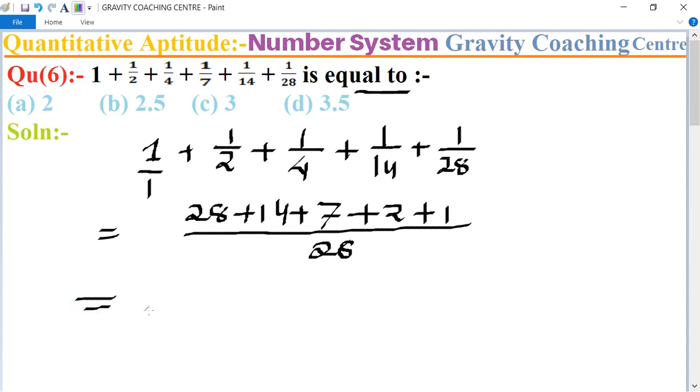The sum of the numerators equals 56 upon 28. Simplifying, 56 divided by 28 equals 2, which is the required answer. So option A is the correct answer.